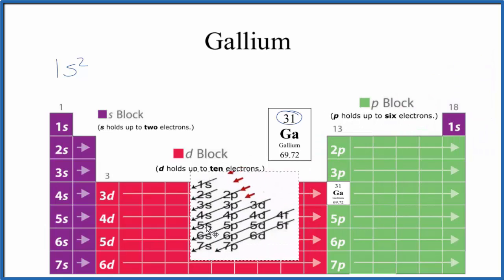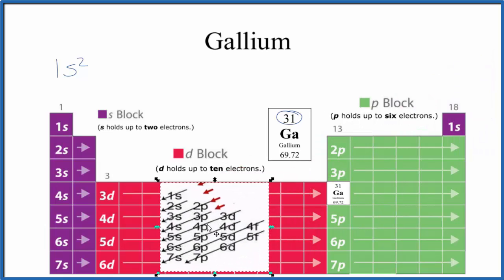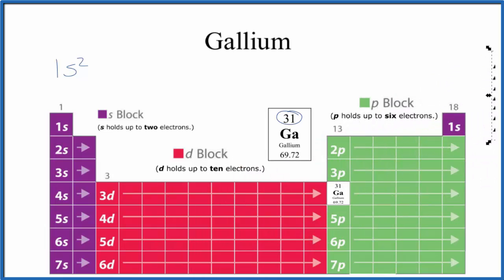You could also use this table here to write the configuration as well. I prefer using the periodic table. I think we see the patterns a whole lot better. So 1s2, then we go to 2s2. So we have two more. We've used 4, we have 31. 2p, and p can hold up to 6, so we'll put 6 in here.